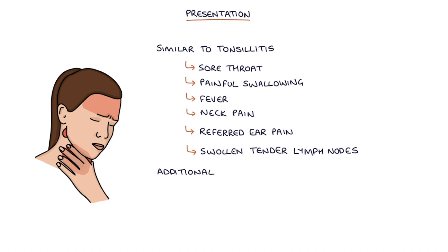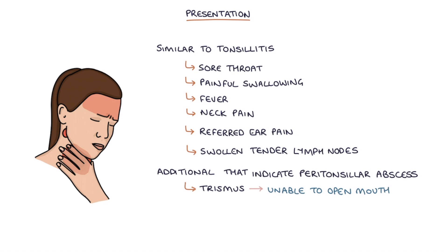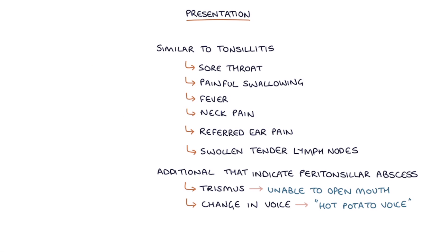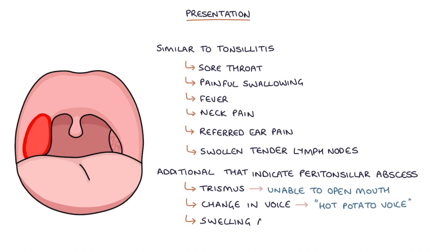Additional symptoms that can indicate a peritonsillar abscess rather than just simple tonsillitis include trismus, which refers to when a patient is unable to open their mouth, a change in their voice due to pharyngeal swelling — described in textbooks as a hot potato voice, as though the patient is talking with a hot potato in their mouth — and swelling and erythema in the area beside the tonsils rather than on the tonsils themselves.